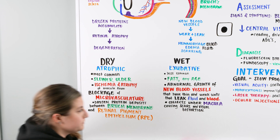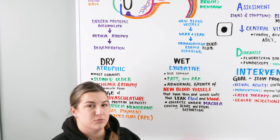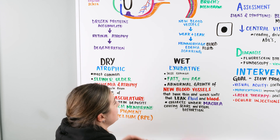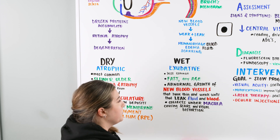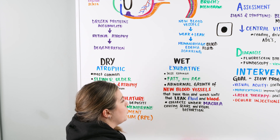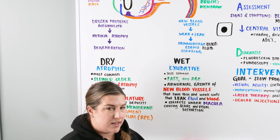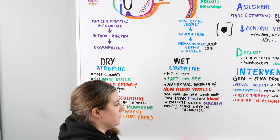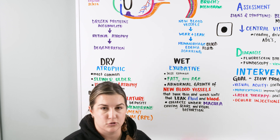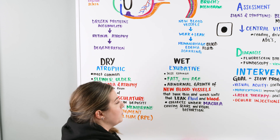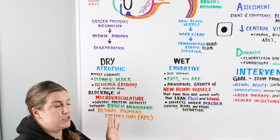The wet version is also known as exudative. It's less common, but it's actually very fast and can occur at any age — it doesn't have to affect only older individuals. This involves abnormal growth of new blood vessels, or neovascularization. Those vessels tend to be thin, weak, and they leak fluid and blood, which collects under the macula and can cause scarring or visual distortion, creating problems with vision.